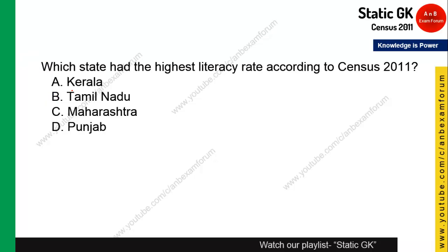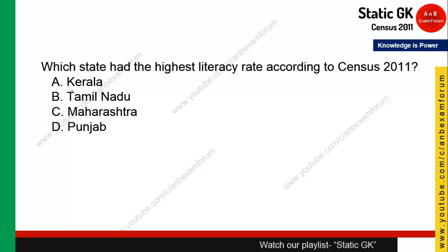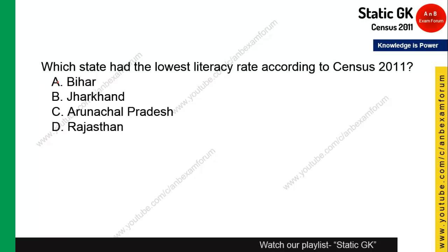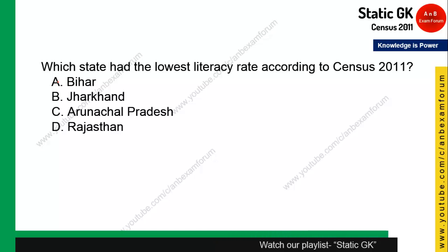Question 10: Which state has the highest literacy rate according to Census 2011? South Indians, especially from Kerala, are known for high literacy, so Kerala is the correct answer. Question 11: Which state has the lowest literacy rate? Bihar has the lowest literacy rate as per Census 2011, though it is improving among the younger generation.